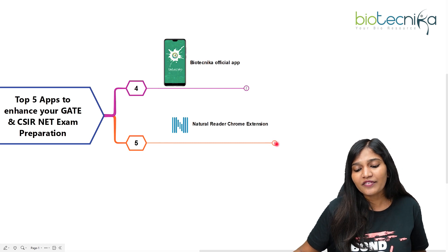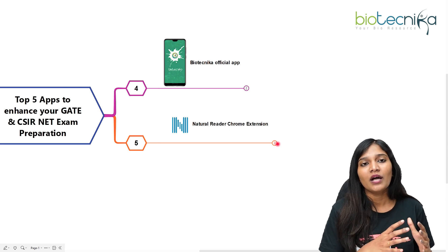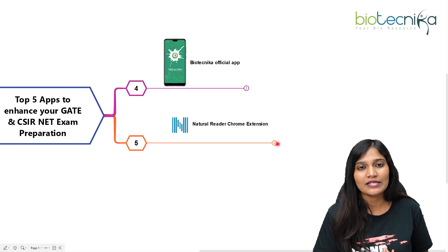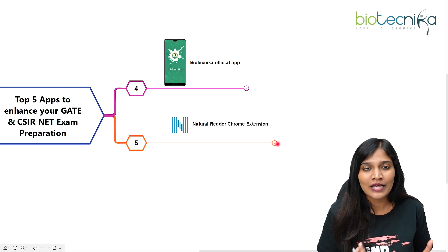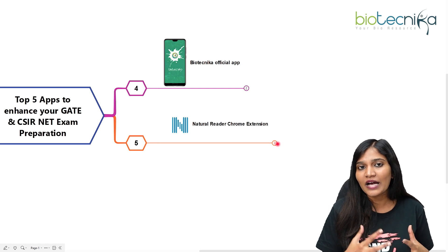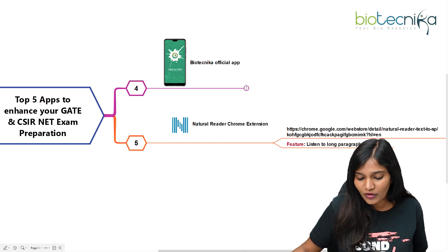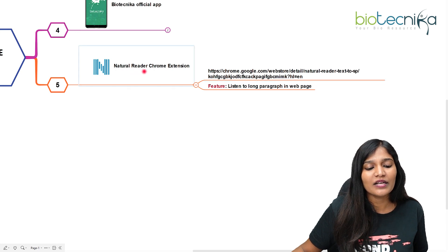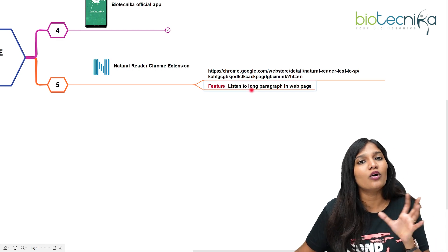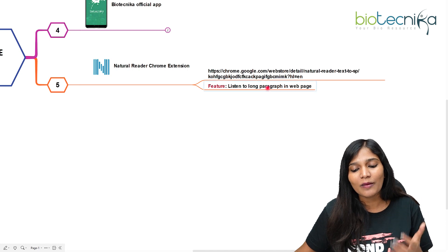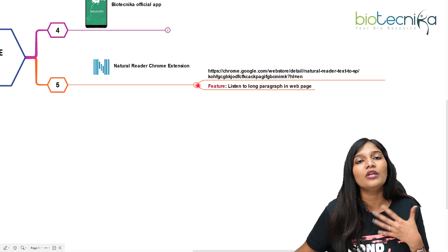The fifth app is the Natural Reader Chrome extension. At times, if you're reading a PDF or a web page about some topic in your gate or CSAR net exam preparation, you might not feel like reading it completely and prefer someone else to read it for you. What you can do is add the Natural Reader Chrome extension to your Google Chrome using the provided link. Once added, it will start reading long paragraphs or long web pages out loud for you, making your reading faster and preserving your energy.